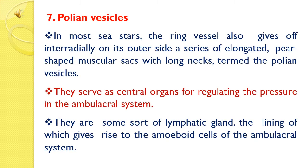Polian vesicles: In most sea stars, the ring vessel also gives off interradially on its outer side a series of elongated, pear-shaped muscular sacs with long necks termed the Polian vesicles. They serve as central organs for regulating the pressure in the ambulacral system. They are some sort of lymphatic glands, the lining of which gives rise to the amoeboid cells of the ambulacral system.